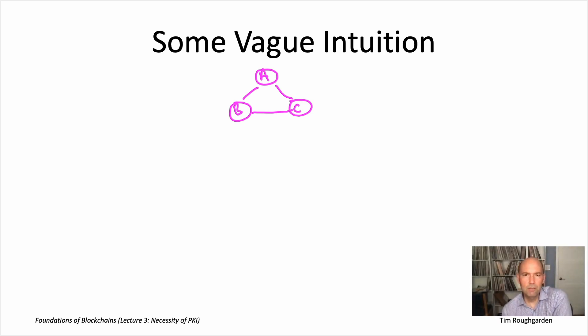And the vague intuition is that while if you're an honest node running a protocol in this setup, you might be able to detect that something's awry, that some node has been behaving inconsistently, but you're not going to be sure which of the other two nodes it is.